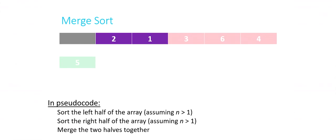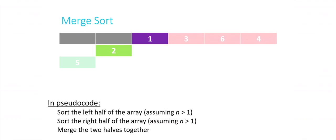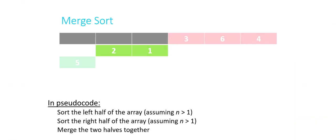Now I go back to the right half of the purple part. How do I sort this sub-array? I go back to my steps: sort the left half only. The left half is now two — a single element, already sorted. Now I sort the right half of the right half of the purple, which is one. One is a single element, easily sorted. Now for the first time I reach the merge step: I compare these two elements, and since one is lower, I place it first in a new hypothetical array. I then compare two against nothing — two is lower, so it goes next.